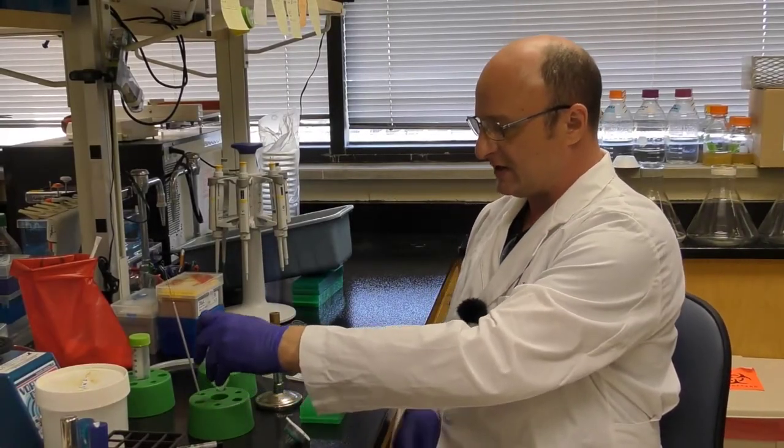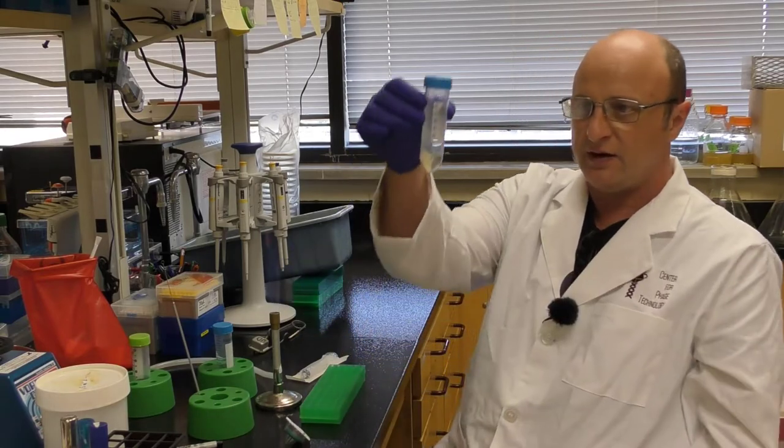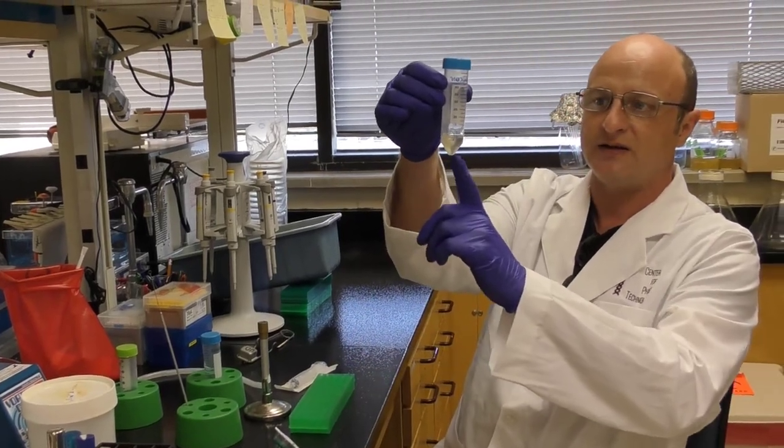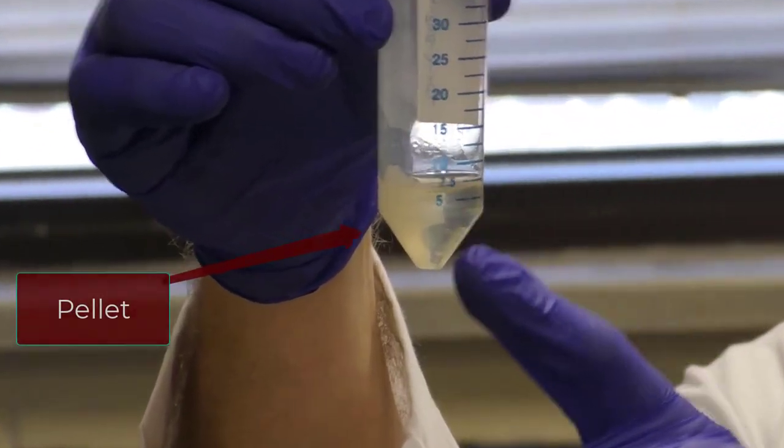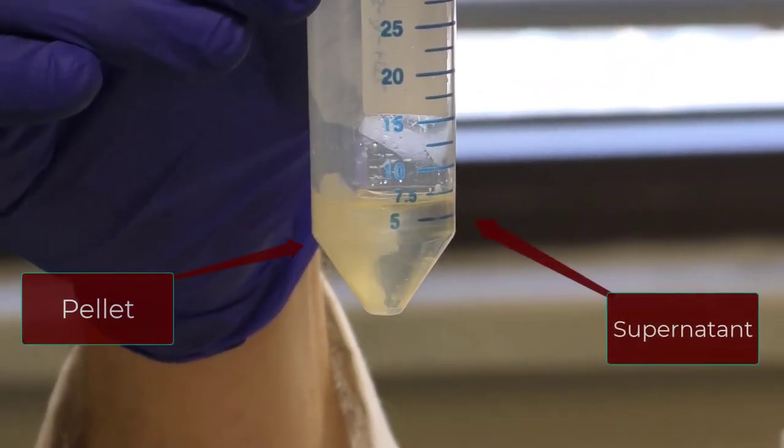So we have now centrifuged our high-titer lysate. And as you can see, we have the pellet this side, and it's kind of loose. And we have the remaining lysate, the liquid fraction here.